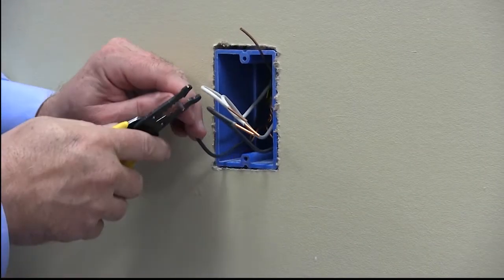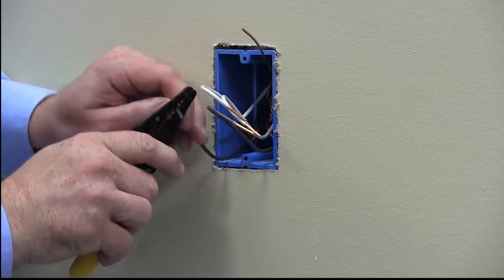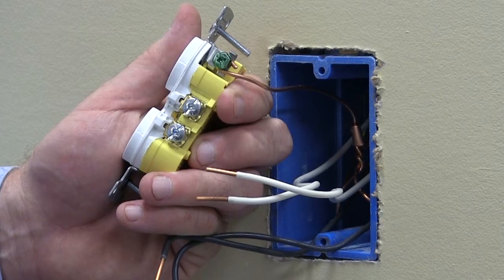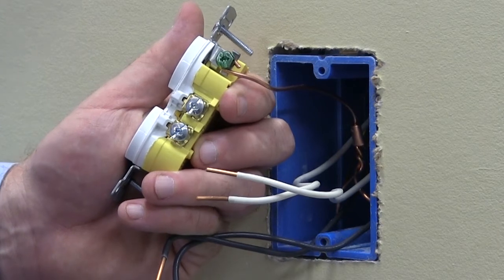Take the remaining wires and strip them 5/8ths. Take the solid ground wire, loop it, connect it, and then terminate it.